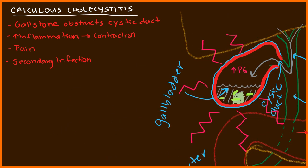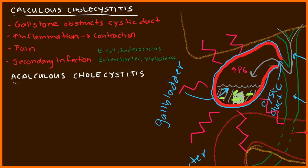For secondary infection, the common microbes are primarily gram-negatives: E. coli, enterococcus, enterobacter, and Klebsiella. Calculous cholecystitis occurs about 95% of the time. In 5% of cases, you can get acalculous cholecystitis — meaning cholecystitis without a stone. It is possible to have inflammation and infection of the gallbladder without a stone present.